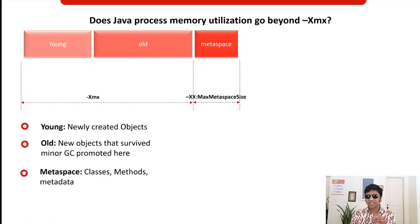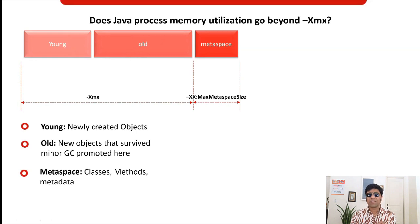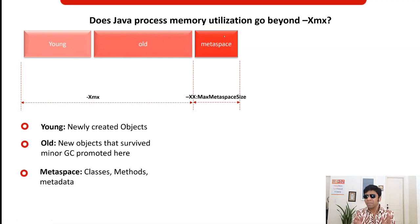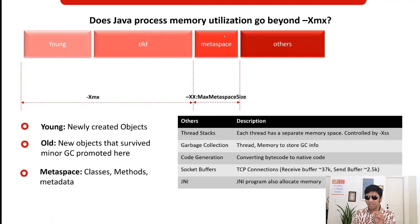After that there is another region called metaspace. This metaspace contains the metadata information required to execute your application — like class definitions and method definitions. After that there is another region; some people call it off-heap native memory, but for our discussion let's call it 'others'.